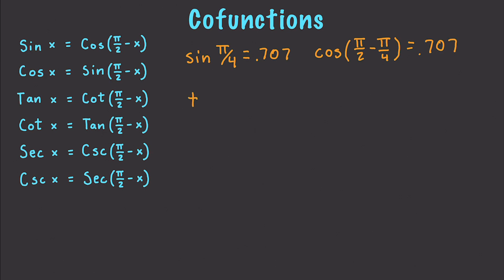The same is true with tangent. Using pi over 4 — though you can use any angle — tangent of pi over 4 equals 1. And cotangent of pi over 4 is also equal to 1. You can test this yourself with secant and cosecant; both equal approximately 1.41.